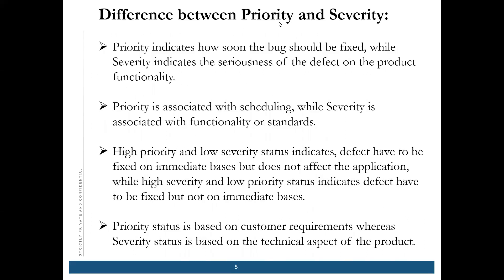What is the difference between priority and severity? Priority indicates how soon the bug should be fixed, while severity indicates the seriousness of the defect on the product functioning. Priority is associated with scheduling, while severity is associated with the functionality.